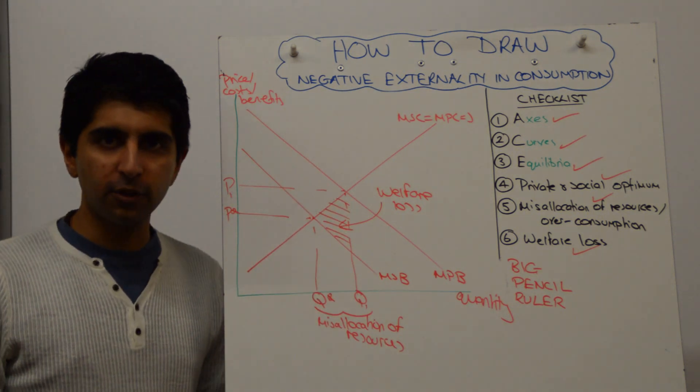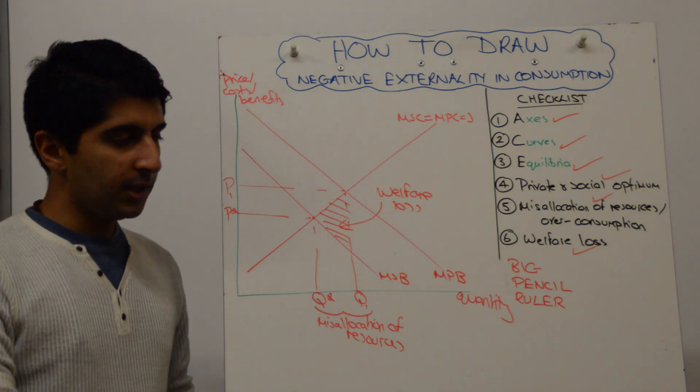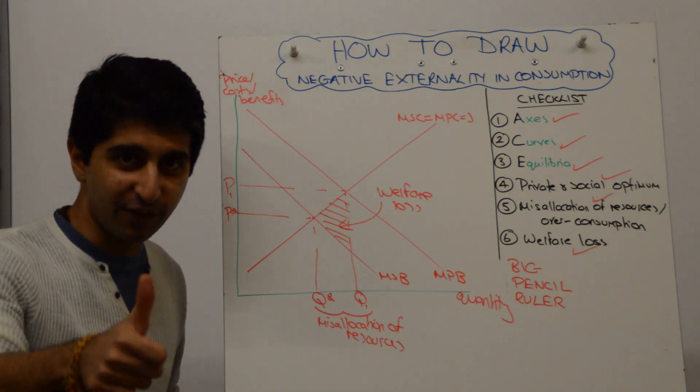That's the negative externality in consumption diagram, also can be used for a demerit good. Practice, practice, practice. See you for the next video. Thank you.